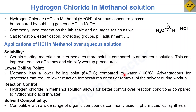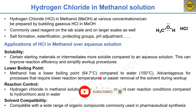Methanol has a lower boiling point compared to water (100°C), which gives advantages for processes that require lower reaction temperatures or easier removal of the solvent during workup. This is very important in process chemistry, especially during crystallizations where you need to concentrate the reaction solvent. If your starting material is not stable at higher temperatures like 100°C, methanol gives a better advantage over aqueous HCl solution. You can also achieve better solubility at a lower temperature compared to water.